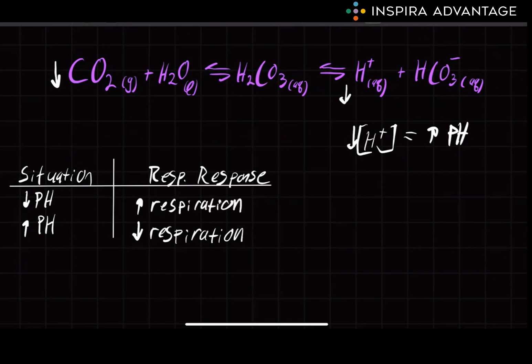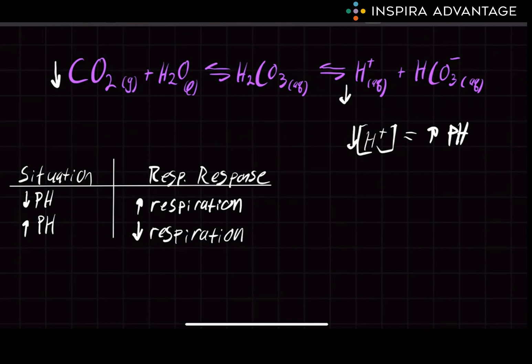This is why if somebody's hyperventilating, you have them blow into a paper bag. This helps prevent too much CO2 from being lost and therefore preventing alkalization of the blood. I hope you found this overview of the respiratory system helpful. Thank you for watching, and I'll see you next time.